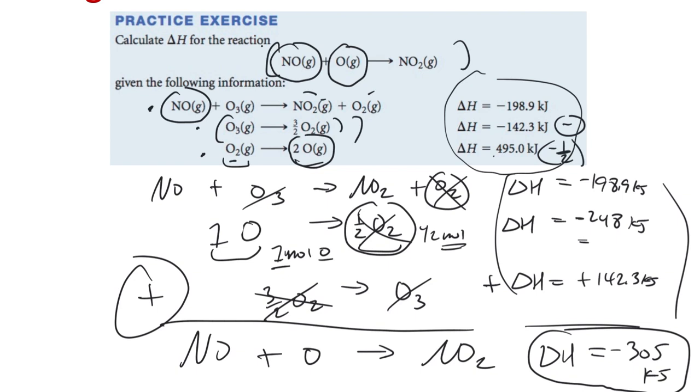These Hess's Law problems are just like a puzzle. If you can solve the puzzle, you'll find the problems straightforward. There are plenty of examples on the daily quizzes — take a look at a couple and make sure you get the idea of manipulating reactions and making the same modifications to the ΔH values.